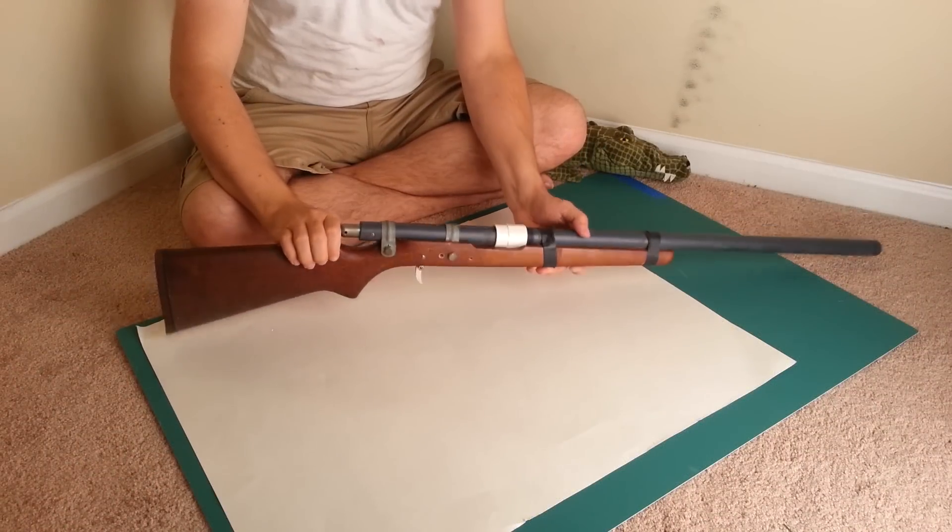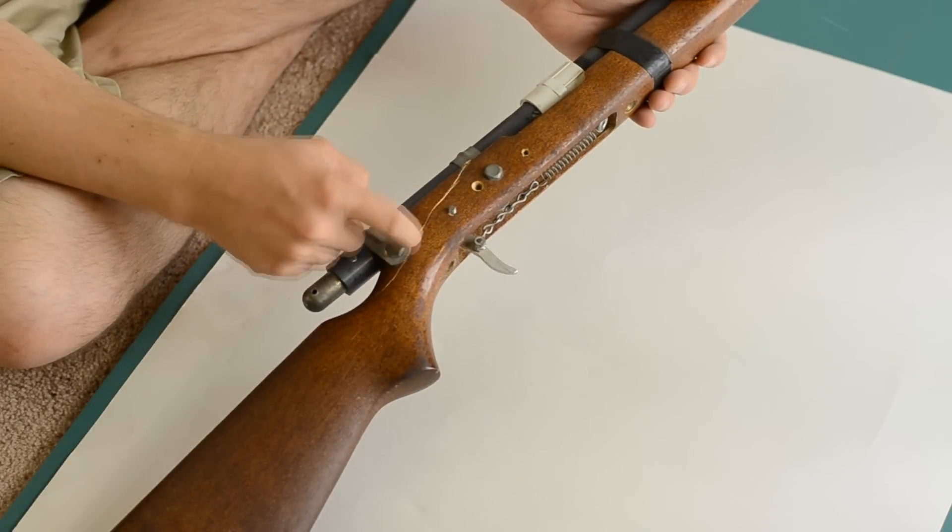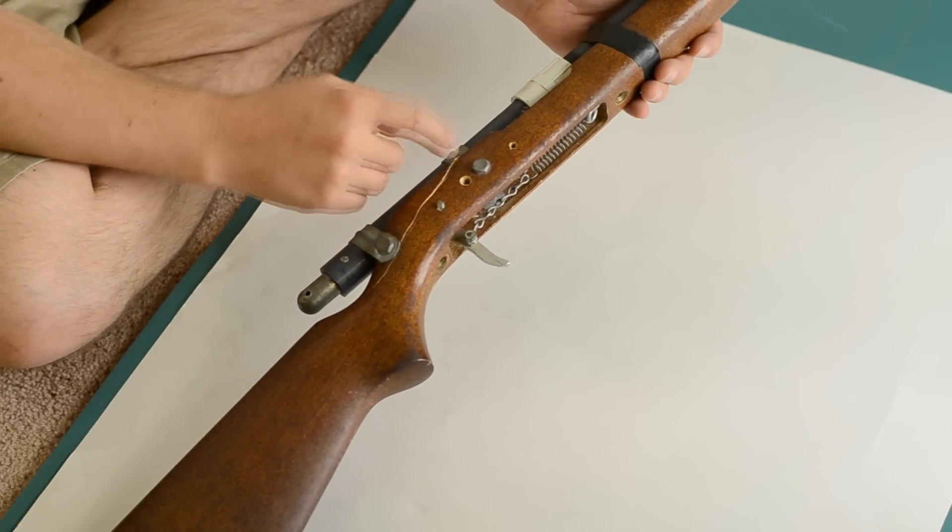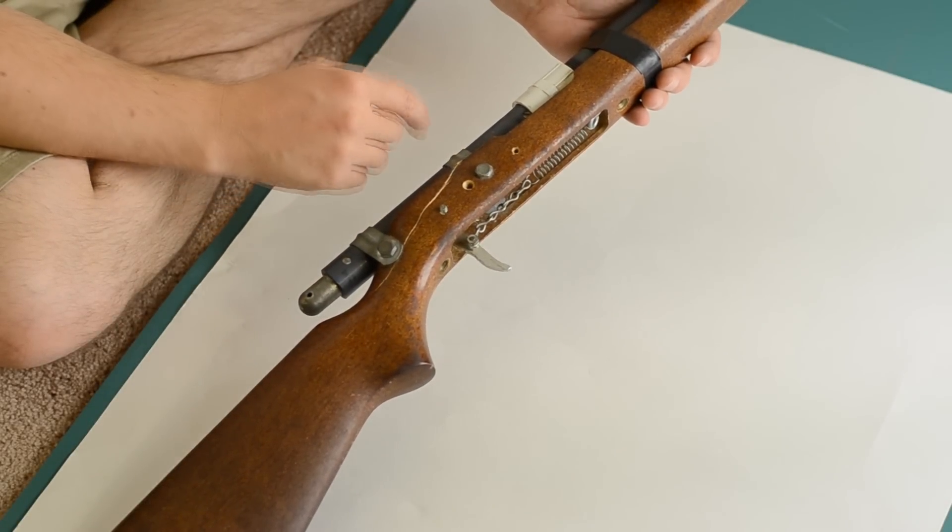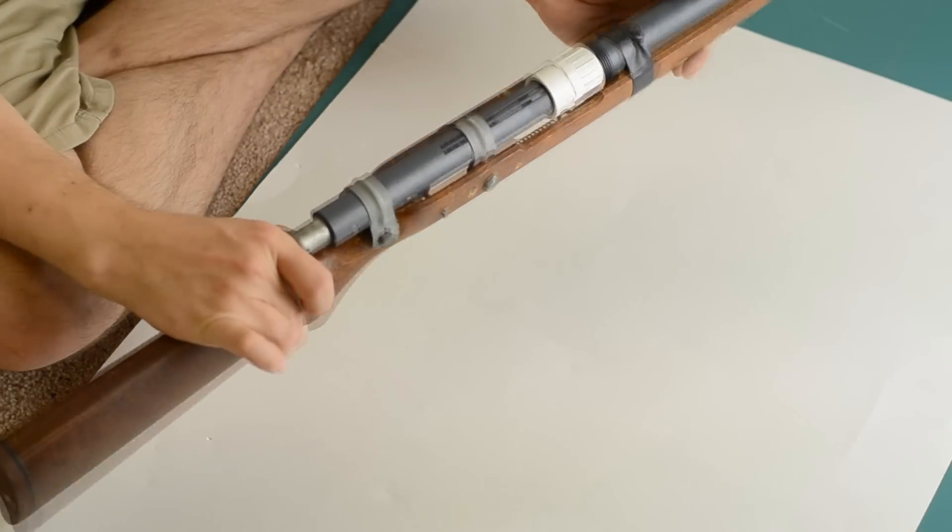I wanted to show you this CO2 cartridge gun that I made when I was a teenager. This stock was broken and my dad couldn't bear to throw it out, so he gave it to me to do with whatever I wanted. And this is what came of it. So I made this gun about 20 years ago. And let me show you how it works.